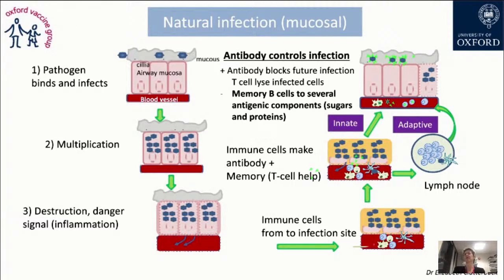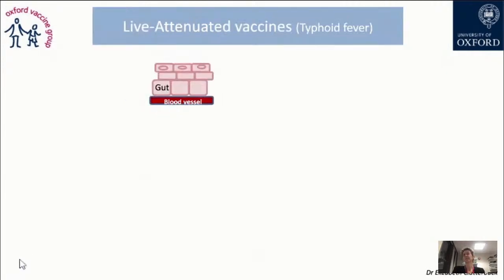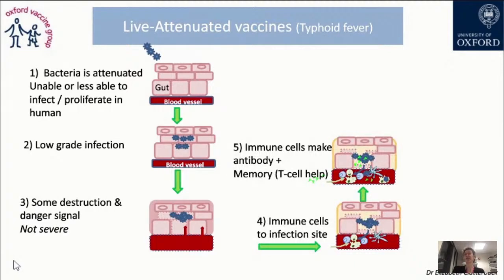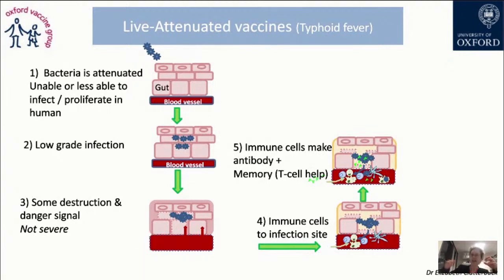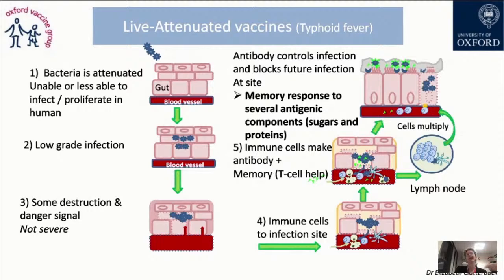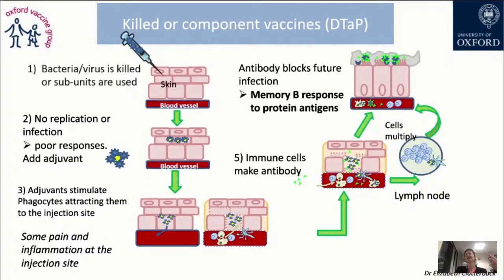The same process happens with the live attenuated vaccine — for example, typhoid fever. The bacteria is attenuated, you have a low-grade infection, and the danger signal is not severe but is still there to push your immune system to make the full response. With a killed or component vaccine like DTaP, there is no replication, no infection, no danger signal — that is typically why you add an adjuvant. The adjuvant stimulates phagocytes to be attracted to the injection site, causing some pain and inflammation, which pushes the immune system to react.